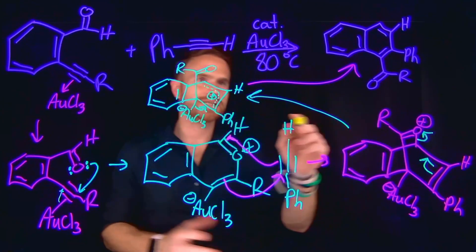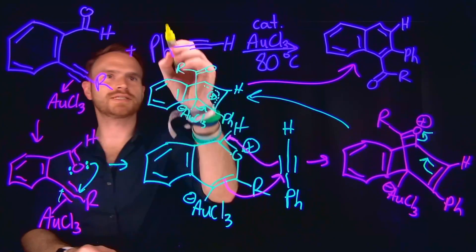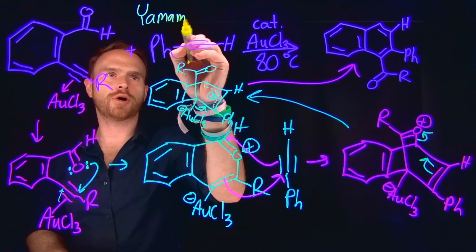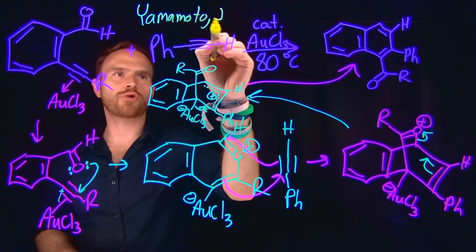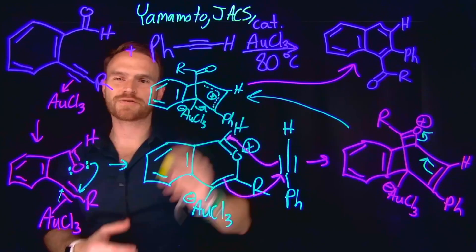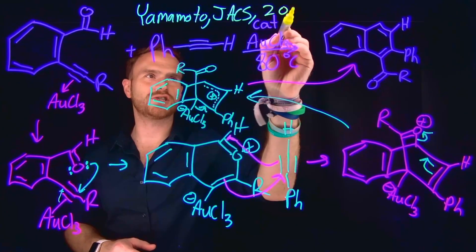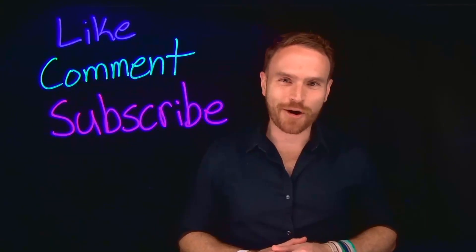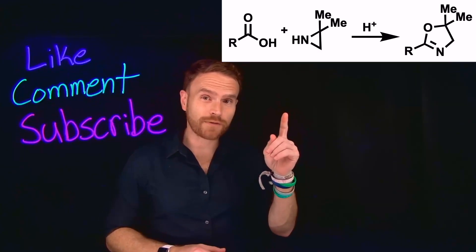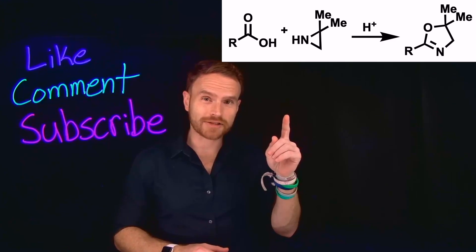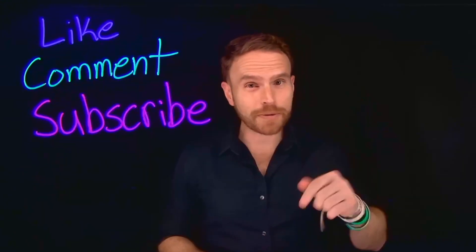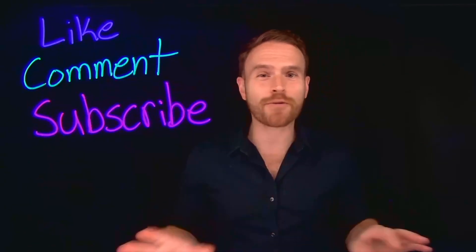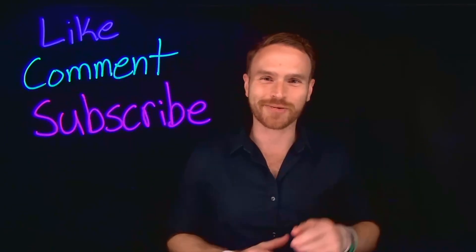In case you are interested in seeing the experimental evidence for this, this comes from a Yamamoto paper published in the Journal of American Chemical Society, or JACS for short, back in 2002. If you enjoyed this week's mechanism, make sure to give it a thumbs up down below. For next week, I'd love to see if you could figure out the electron-pushing arrow mechanism for this chemical transformation. Drop your thoughts as a comment down below and make sure that you subscribe to the channel so that you never miss another Mechanism Monday. I'll see you next week.